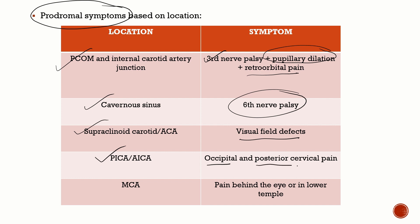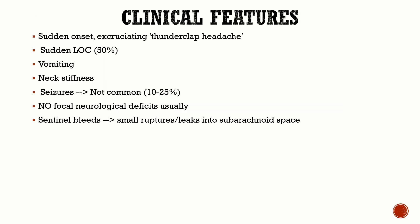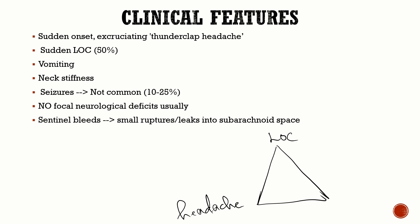An aneurysm in the posterior inferior or anterior inferior cerebral artery can cause occipital or posterior cervical pain. A middle cerebral artery aneurysm can present as retroorbital pain or pain in the lower temple. The clinical features of SAH to remember: severe acute onset thunderclap headache, loss of consciousness, and no focal neurological deficit — this constellation should immediately suggest subarachnoid hemorrhage.